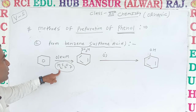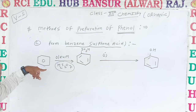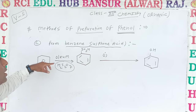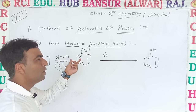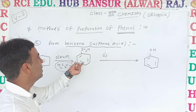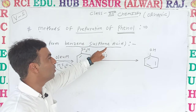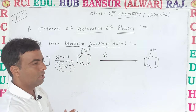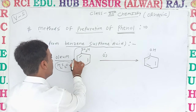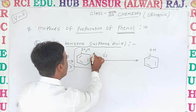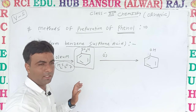Oleum reacts with benzene through a chemical reaction and gives you benzene sulfonic acid in one step. That is the reagent used for this transformation.